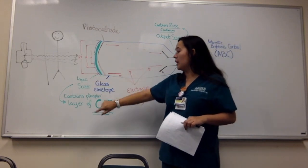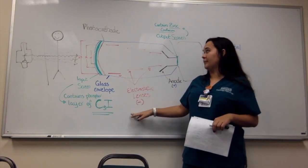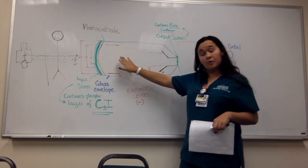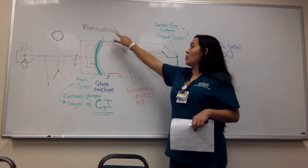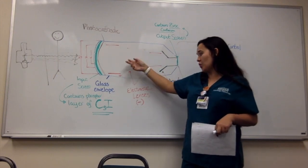So the input screen contains a phosphor layer of CSI, which is also known as cesium iodide. Once it gets the photons, it turns it into light photons, and it goes to the photocathode. The photocathode gets the light photons and turns it into electrons.